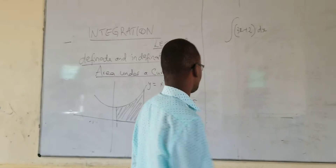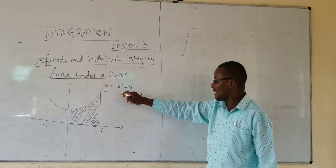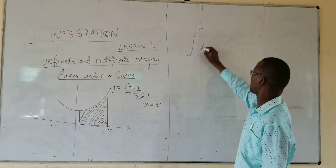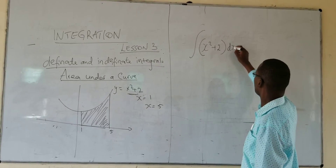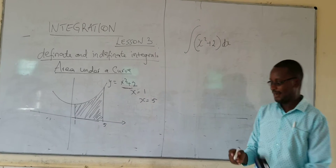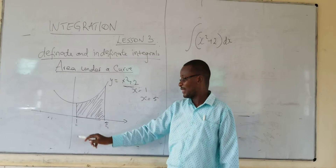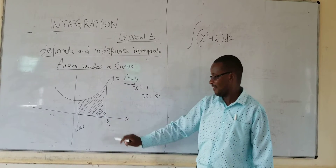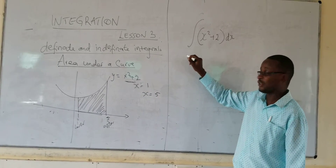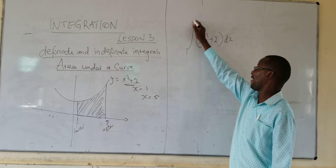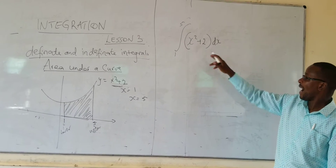Now, the way we do this — write the sign of integration. We integrate the curve itself, the equation of the curve itself: X squared plus 2, with respect to X. And we have limits. One of our limits is 1 and the other one is 5. So, this one is known as the lower limit and the 5 is the upper limit. We insert the limits in the integration sign — so we put 1 and 5, meaning you are integrating within the limits of 1 and 5.